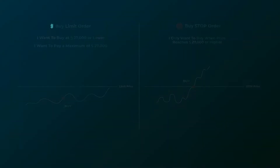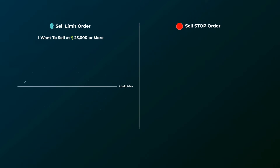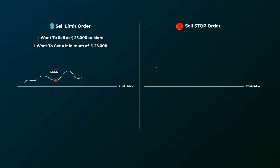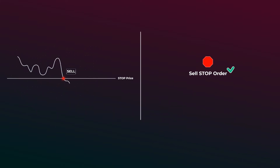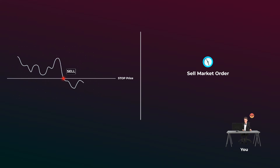The opposite happens with sell orders. In a sell limit order, you are saying "I want to sell at $23,000 or more" — if you set the limit price lower than the market price, your order executes immediately at the market price. But with a sell stop order, you are saying "I want to sell only when the price reaches $23,000 or less," so the order only executes when the price falls to the stop price. Remember, once a stop order is activated, it changes to a market order and gets executed at the market price. This can cause problems with highly volatile cryptos, as the price may move too fast during the small time period between activation and execution, meaning your stop order may be executed at a market price very far from the stop price you set.